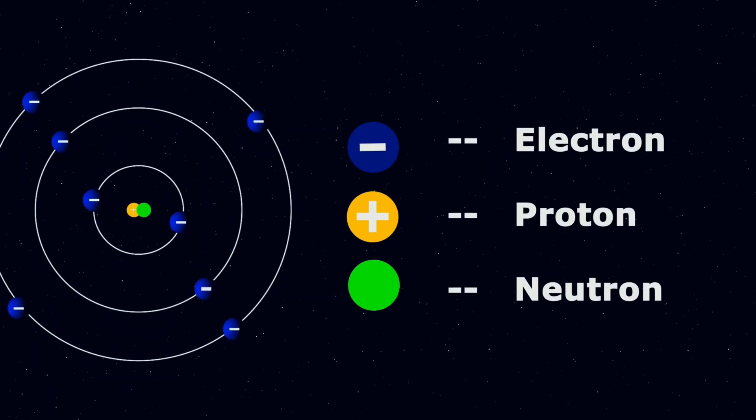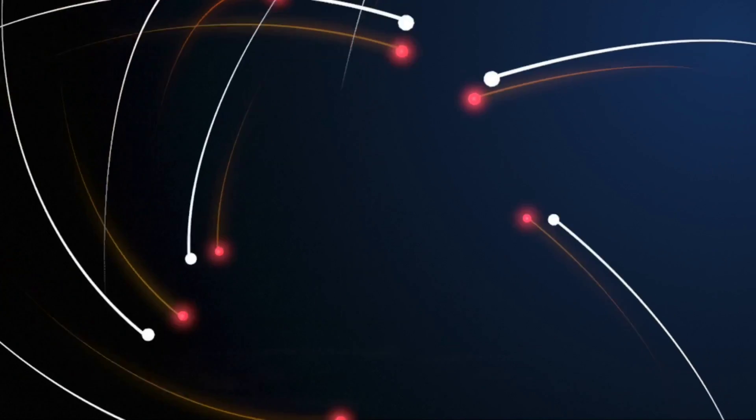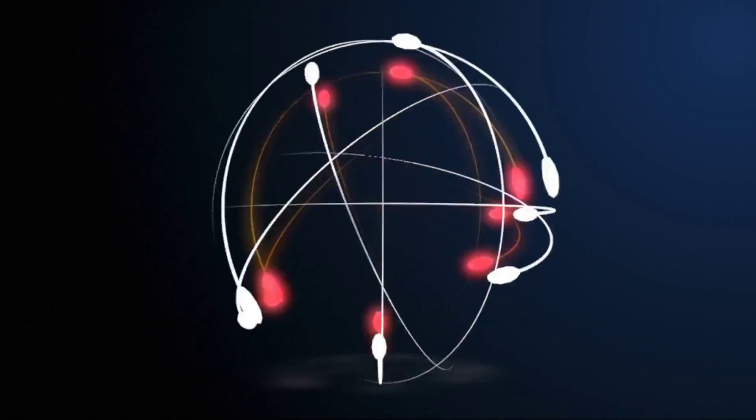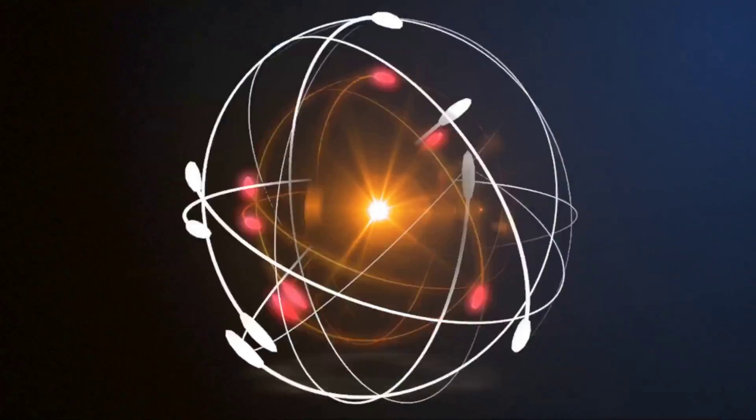Even subatomic particles like electrons, protons, and neutrons are made up of these strings. And the unique characteristics of each subatomic particle is because of the manner in which the strings vibrate.